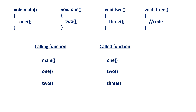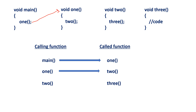When we see main function and one function, main is the calling function and one is the called function, because in main function it is calling one function. In this scenario, main becomes calling function and one becomes called function. While one function is executing, it is calling two function, so one becomes calling function and two becomes called function.